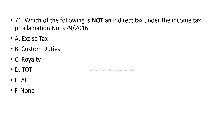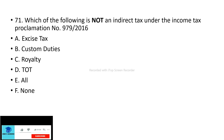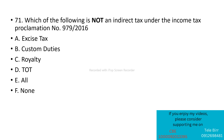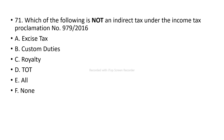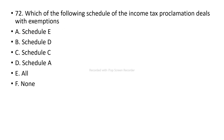Next question: which of the following is not an indirect tax under income tax proclamation? Tax incidence and tax period are direct tax concepts. Excise tax, customs duty, and turnover tax are indirect taxes. Royalty tax is categorized as a direct tax, so the answer is royalty tax — it is not an indirect tax.